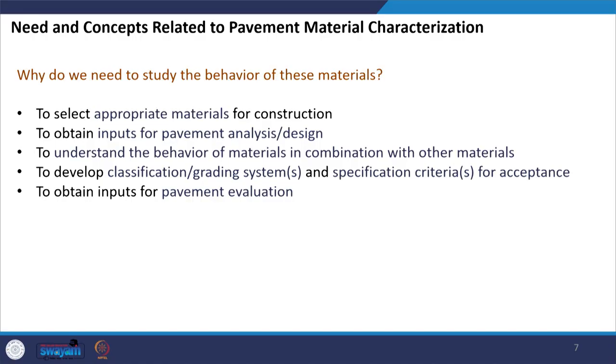The study of materials is also required to get inputs for pavement evaluation. Let us say you have a constructed pavement designed for 20 years, and after 5 years you want to know the remaining life. One way is to cut open the pavement, get the materials from it, test them in the laboratory, compare the present property with the property used during pavement design, and use a back-calculation process to determine the remaining life using the same pavement design procedure adopted initially.